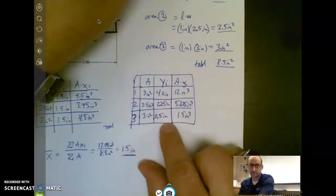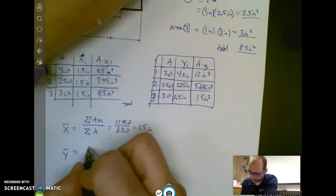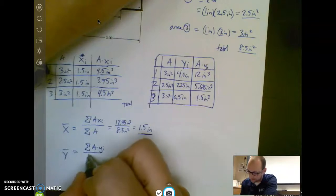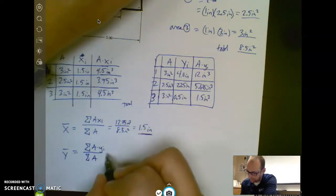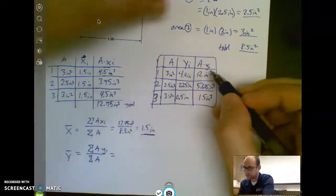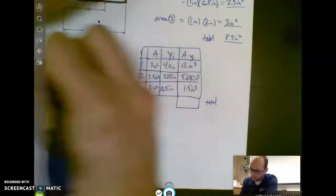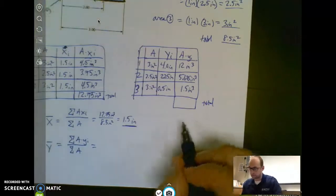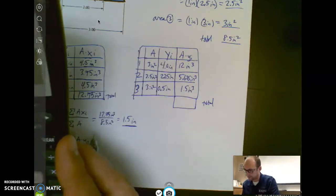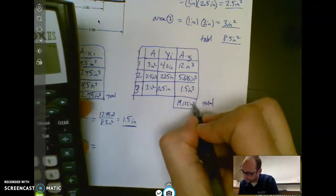Now this one's going to be a little weird because they're all at different heights. So let's actually do the same thing for the y bar, and that is the sum of the products of A times yi, which we just did in our columns, over the sum of the areas. So I'm going to make my total. My total yis are going to be 12 plus 5.625 plus 1.5 is 19.125 inches cubed.